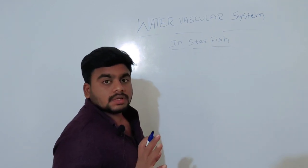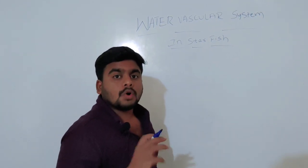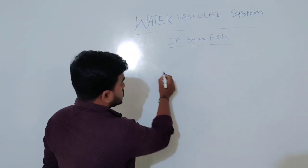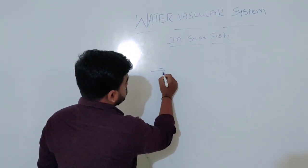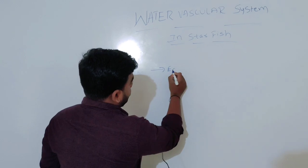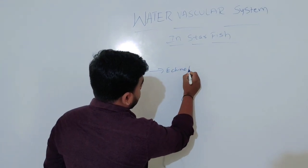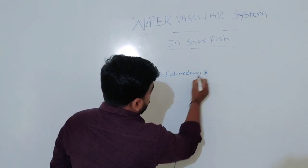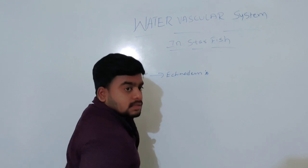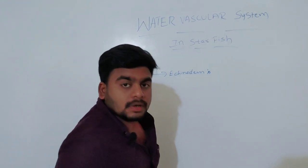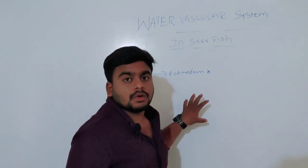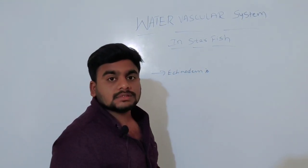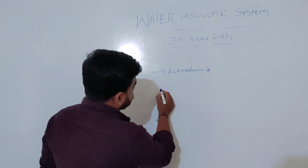The water vascular system is most commonly seen in echinoderms. It is also called the ambulacral system.